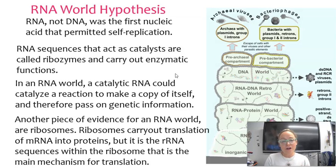Another piece of evidence for an RNA world is that ribosomes carry out translation of mRNA into proteins, but it's rRNA sequences within the ribosome that is the main mechanism for translation. When we think about life on Earth and how we use these proteins, it's actually rRNA and mRNA and tRNA that are responsible for producing these proteins, which is another source of evidence for an RNA world hypothesis.